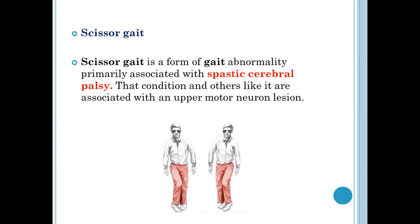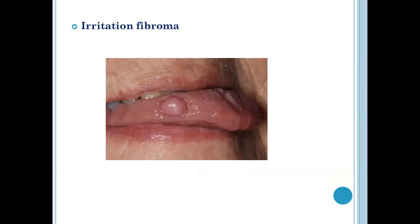The next question was about scissor gait. Scissor gait is a gait abnormality associated with spastic cerebral palsy. This condition is associated with upper motor neuron lesion.